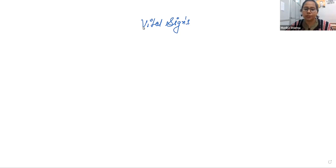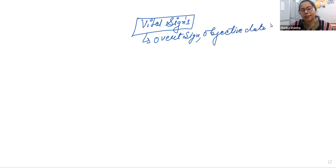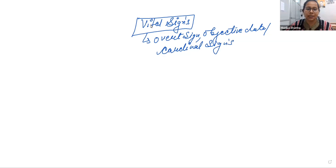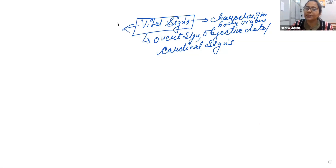Good morning. Today the topic for discussion will be vital signs. Vital signs are also called overt signs, objective data, and cardinal signs. Basically, what we observe in vital signs are the characteristic features of the body organs — 'vital' refers to the important organs of the body.